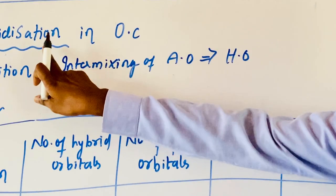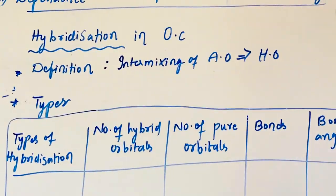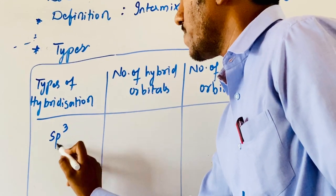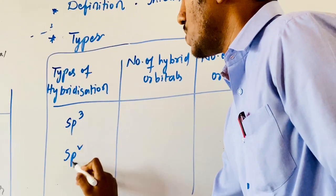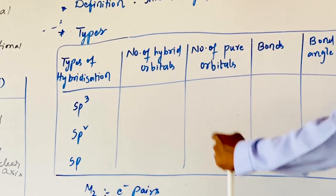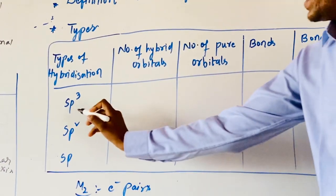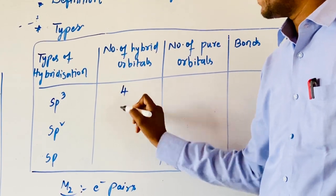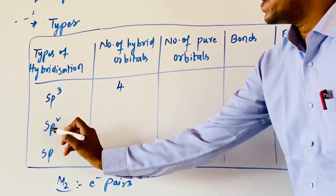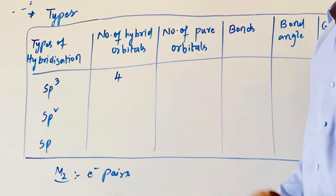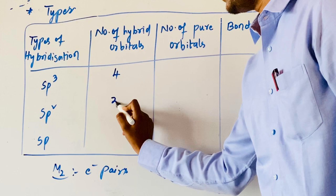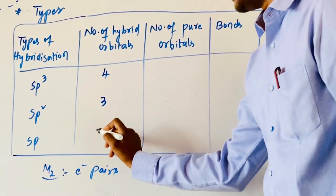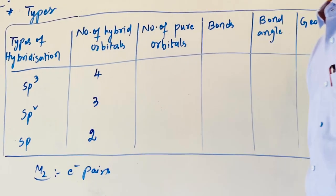The types of hybridization in organic compounds are sp3, sp2, and sp. For sp3: 1 s-orbital + 3 p-orbitals = 4 hybrid orbitals. For sp2: 1 s-orbital + 2 p-orbitals = 3 hybrid orbitals. For sp: 1 s-orbital + 1 p-orbital = 2 hybrid orbitals.